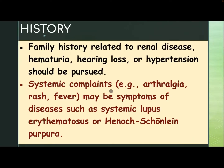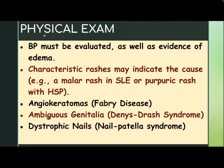Systemic complaints such as arthralgia, rash, and fever may be symptoms of diseases such as systemic lupus erythematosus or Henoch-Schönlein purpura. On physical examination, blood pressure must be evaluated as well as evidence of edema. Characteristic rashes may indicate the cause, like malar rash in SLE or purpuric rash in Henoch-Schönlein purpura, angiokeratoma in Fabry disease, ambiguous genitalia in Denys-Drash syndrome, and dystrophic nails in nail-patella syndrome.